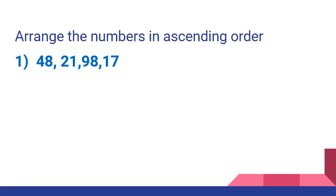Which one is the smallest number here? Yes, 17 is the smallest number. After 17, which one will be the next smallest number? 21. After 21, the next smallest number will be 48. After 48, the next number will be 98. The ascending order of these numbers will be 17, 21, 48 and 98.